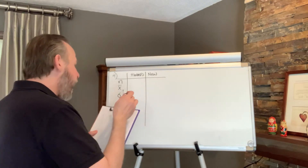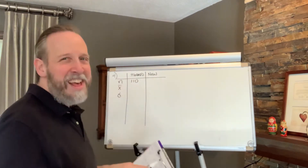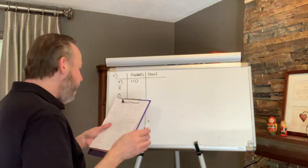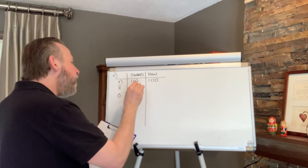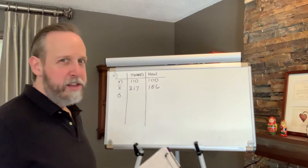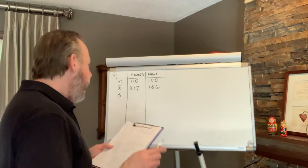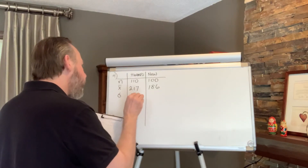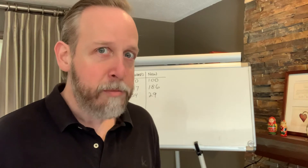In the standard group, 110 people were studied; in the new group, 100 people were studied. The standard recovery time is 217 days, but with the new procedure it was 186 days — obviously a lot shorter recovery time. The standard deviation of the standard procedure was 34 days, but the standard deviation of the new procedure is 29 days, meaning it is less variable. So people heal much faster and more consistently. This is looking like the new procedure is doing what it's supposed to do.